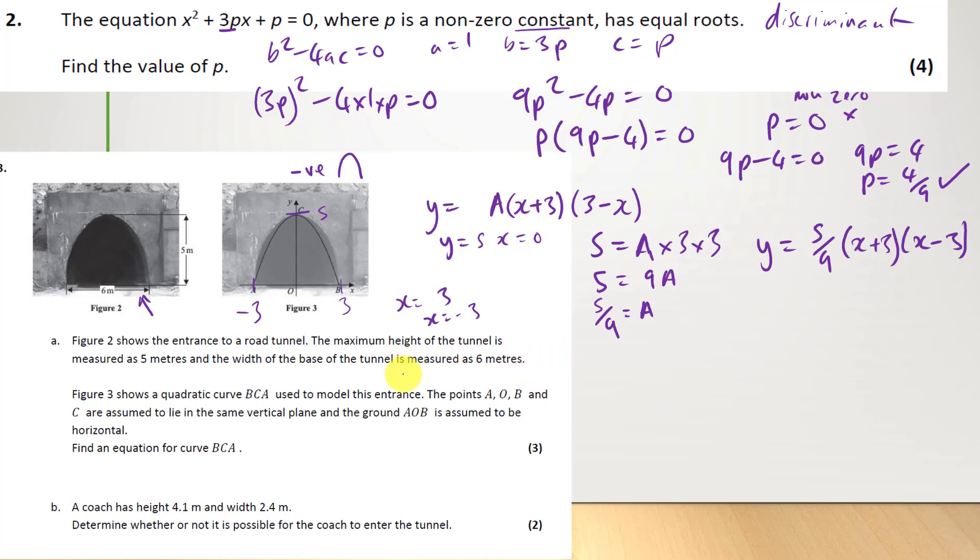This is saying a coach has height 4.1 meters and width 2.4. Determine whether or not it's possible for the coach to fit through the tunnel. Right. So, the coach, let's just draw the coach from front view. That's the coach. Right. So, be careful here. If the coach is 2.4 meters, we don't use x equals 2.4. So, we don't do that because what we want is x here and x here. So, that's going to be 1.2 and 1.2. So, we're going to divide the width of the coach in half.